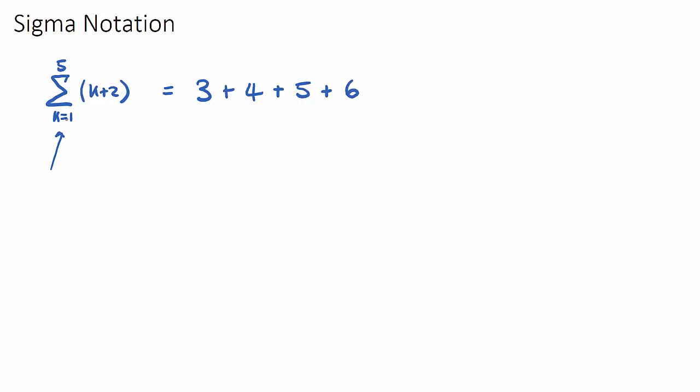Now when do we stop? Well we stop when k reaches this top number, which in this case is 5. So this will be the last one. If k has now reached the top number 5, 5 plus 2 is 7. So this here actually just means 3 plus 4 plus 5 plus 6 plus 7. It's this equation if we sub in the starting value and we keep going up to the end value. So if we just add this up, we're going to get 7 plus 5 is 12, then 18, and then 25.